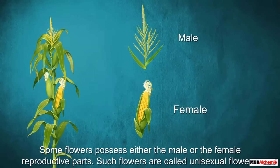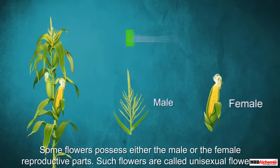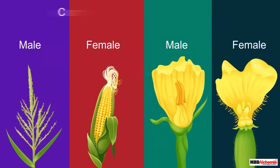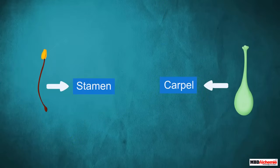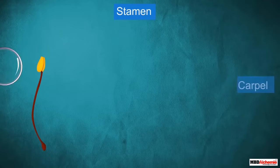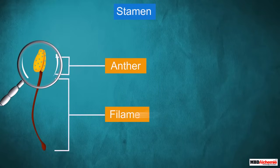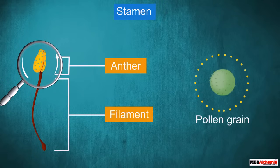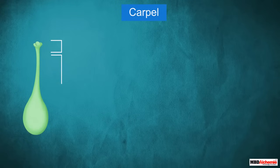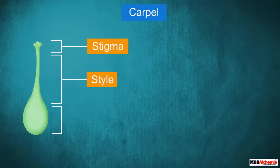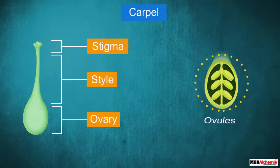On the other hand, some flowers possess either the male or the female reproductive parts; such flowers are called unisexual flowers, for example corn and cucumber. Now let us know about the different parts that make up a stamen and a carpel. A stamen is made of two main parts — anther and filament. The anther produces pollen grains, which contain the male gametes. A carpel is made up of three parts: the terminal part is called the stigma, the middle elongated part is the style, and the swollen bottom part is the ovary. Inside the ovary, ovules are present.